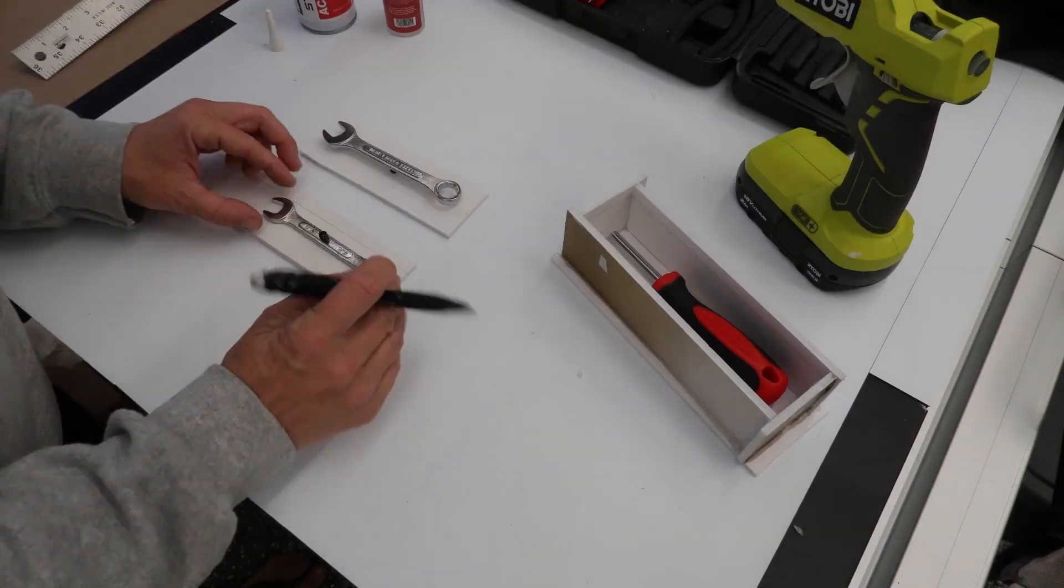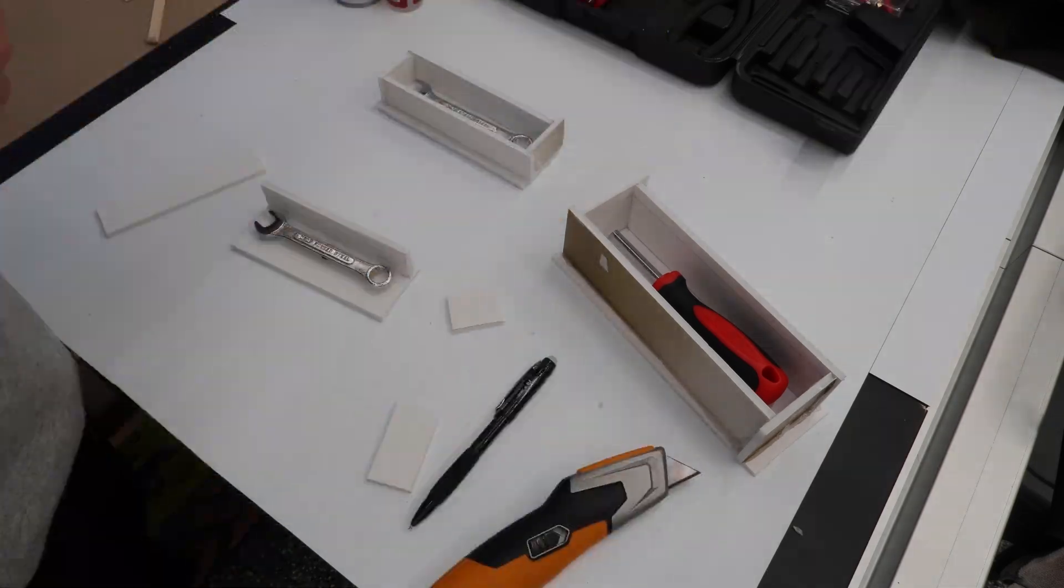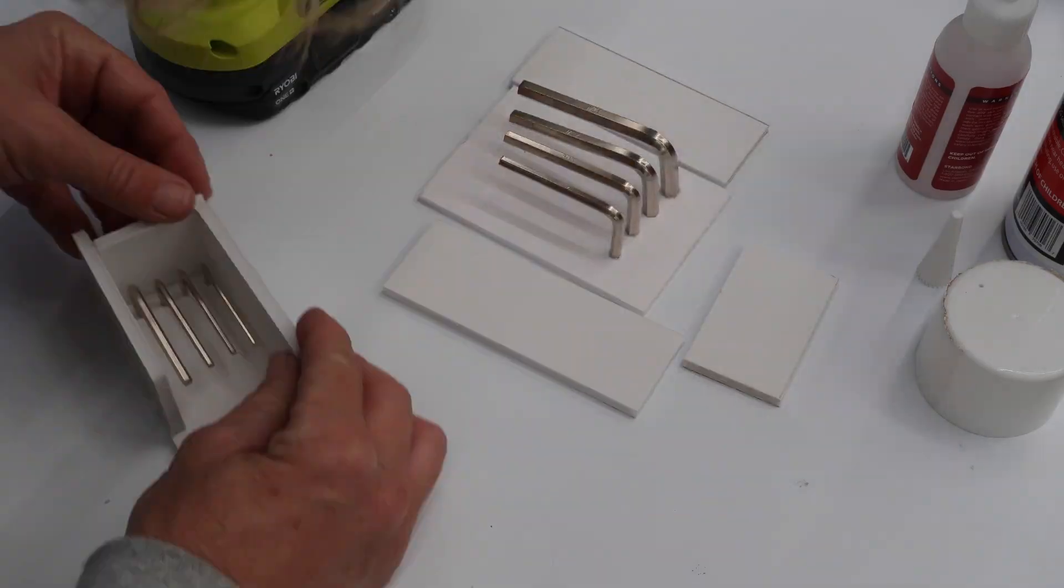Okay, so the hammer mold is in the pressure pot. It's gonna sit for four hours. So while we wait, I'm gonna make all the other tool molds and get them ready so that we can just repeat the process, then we'll move forward with epoxy.